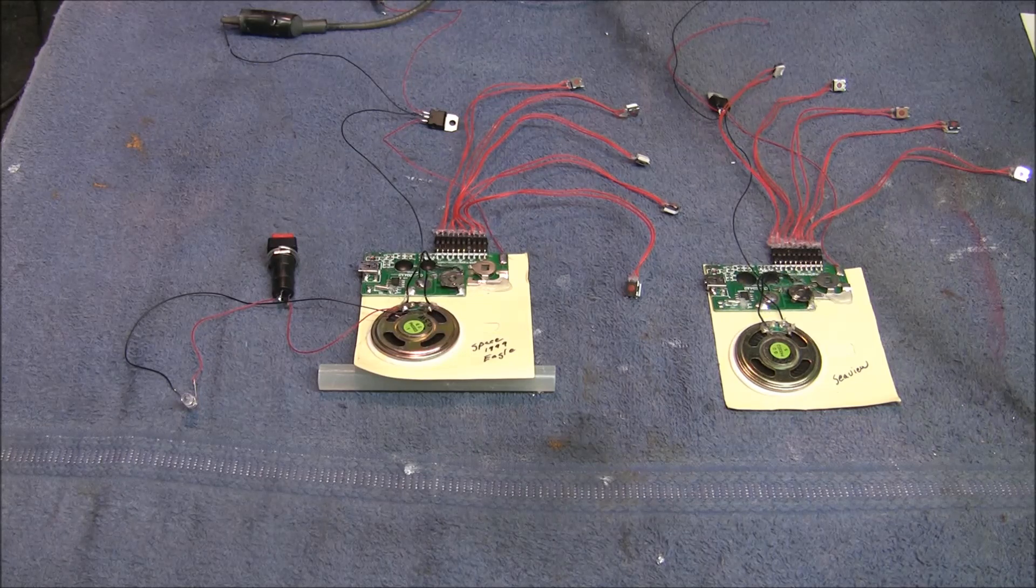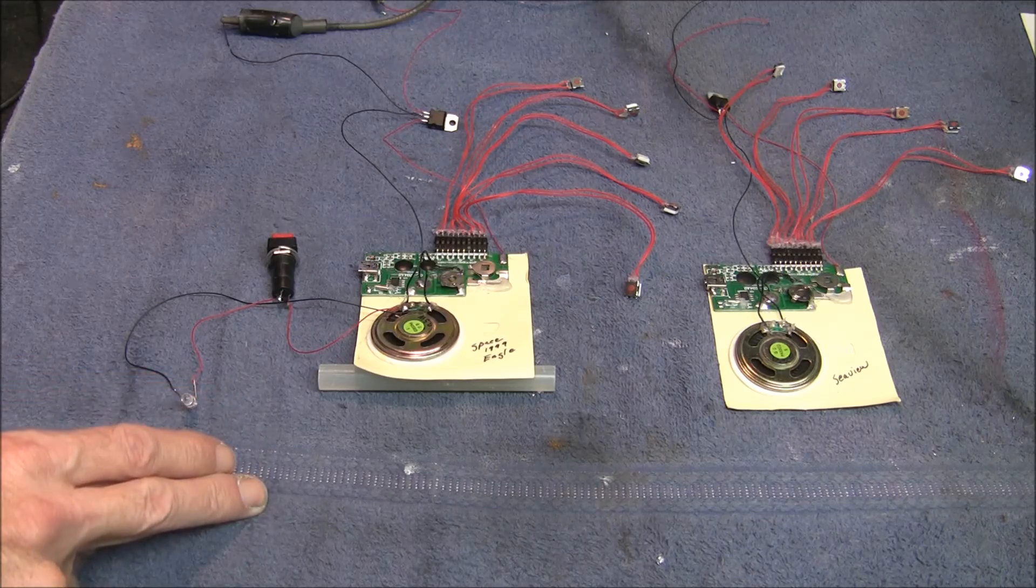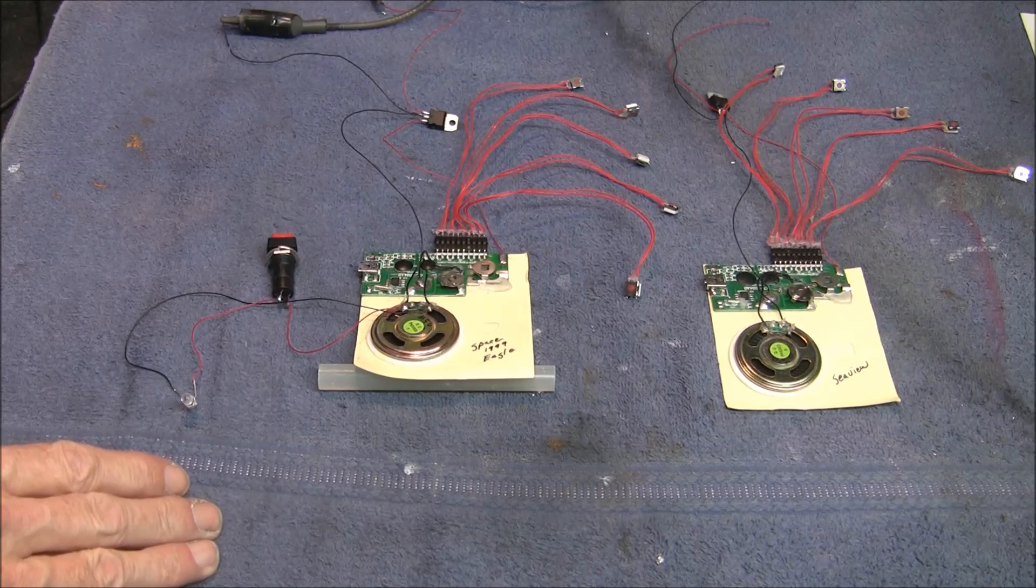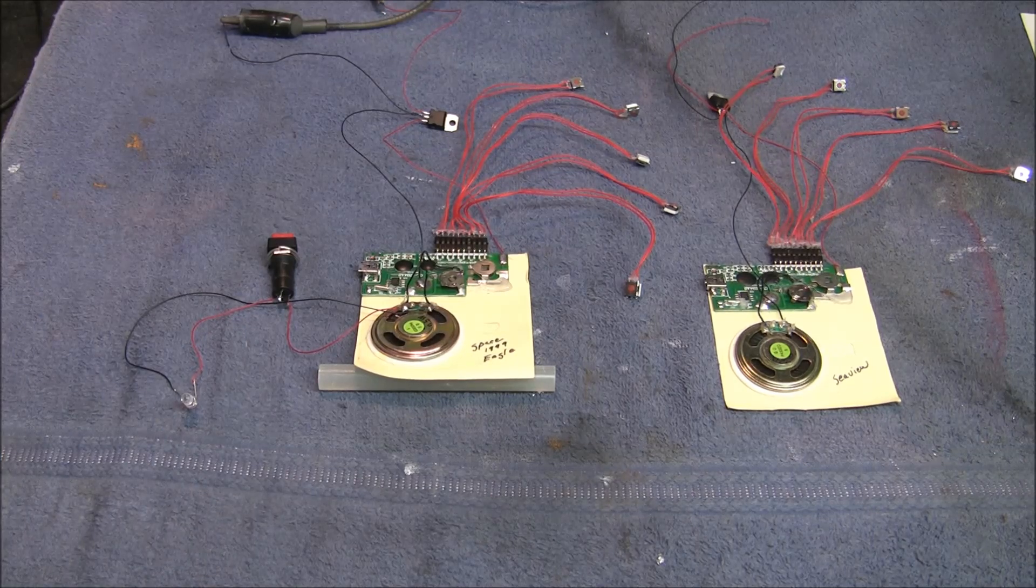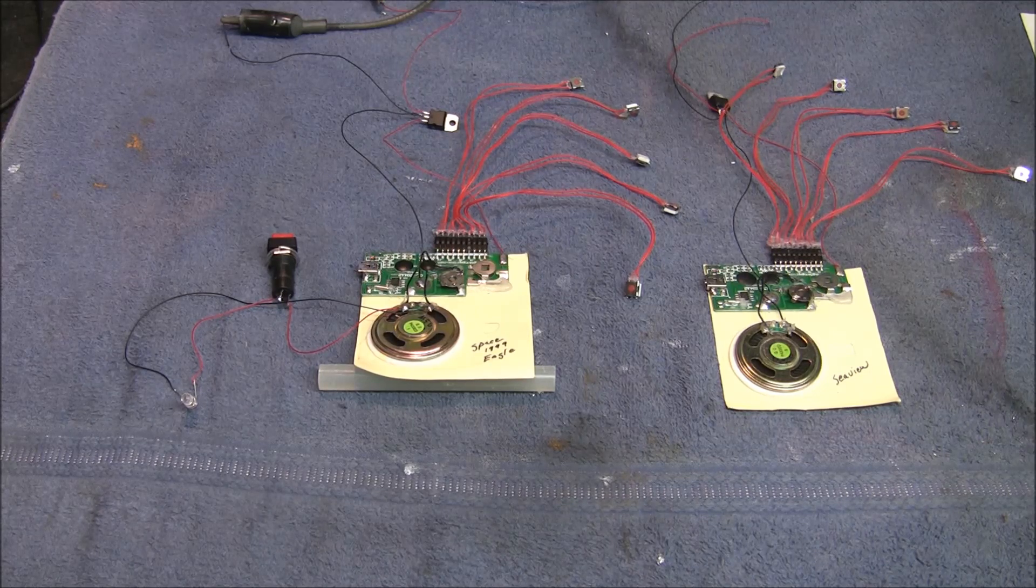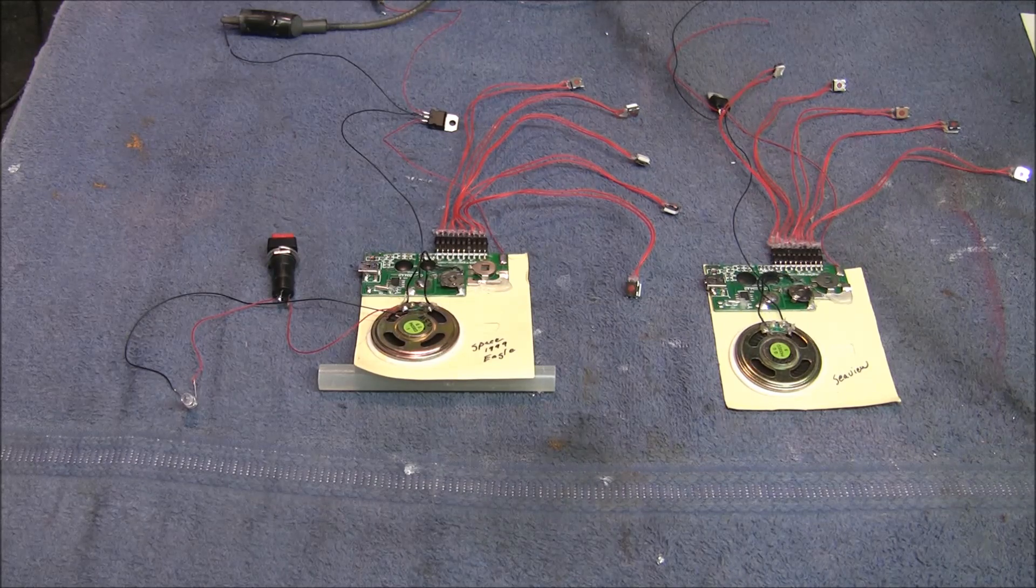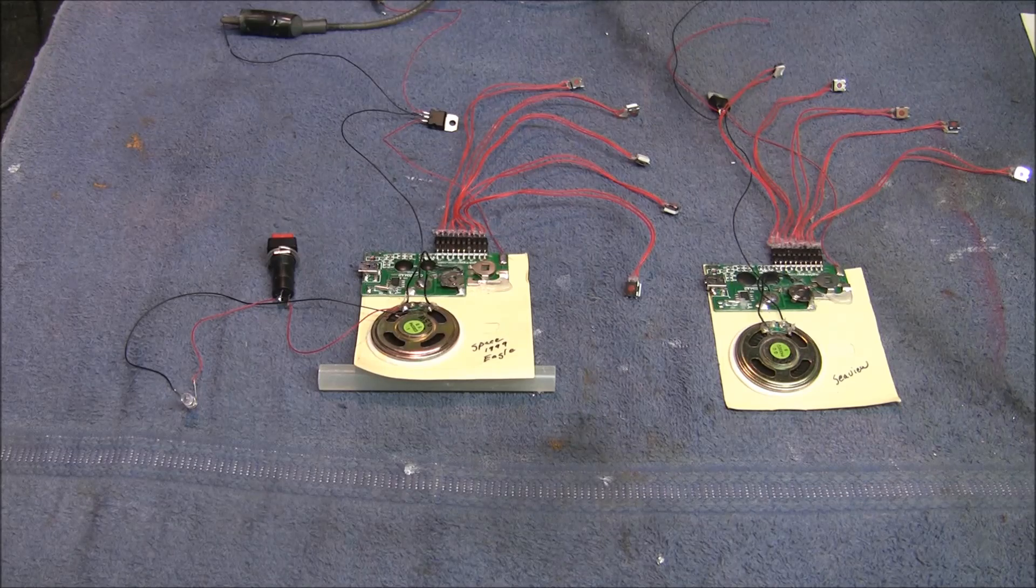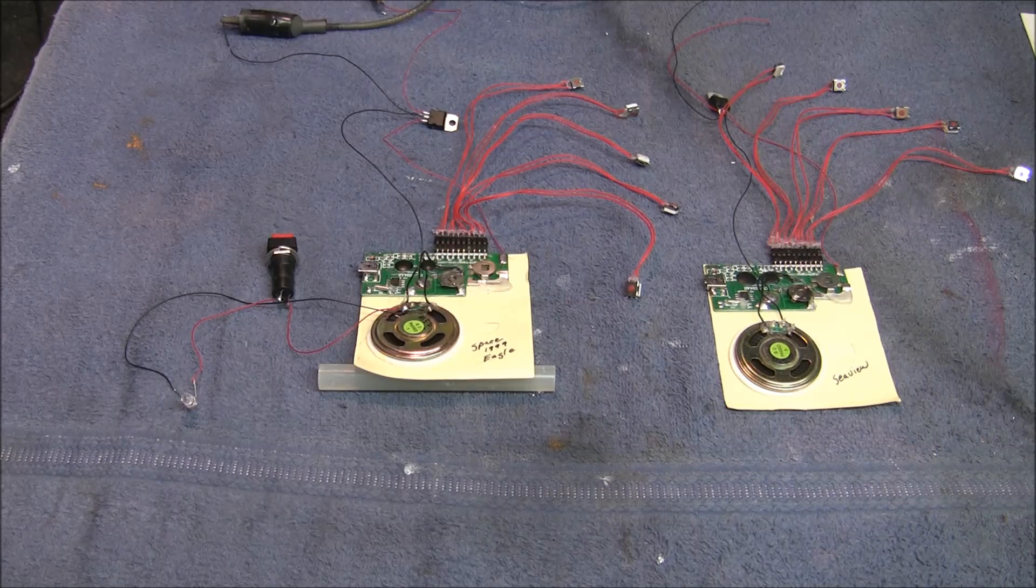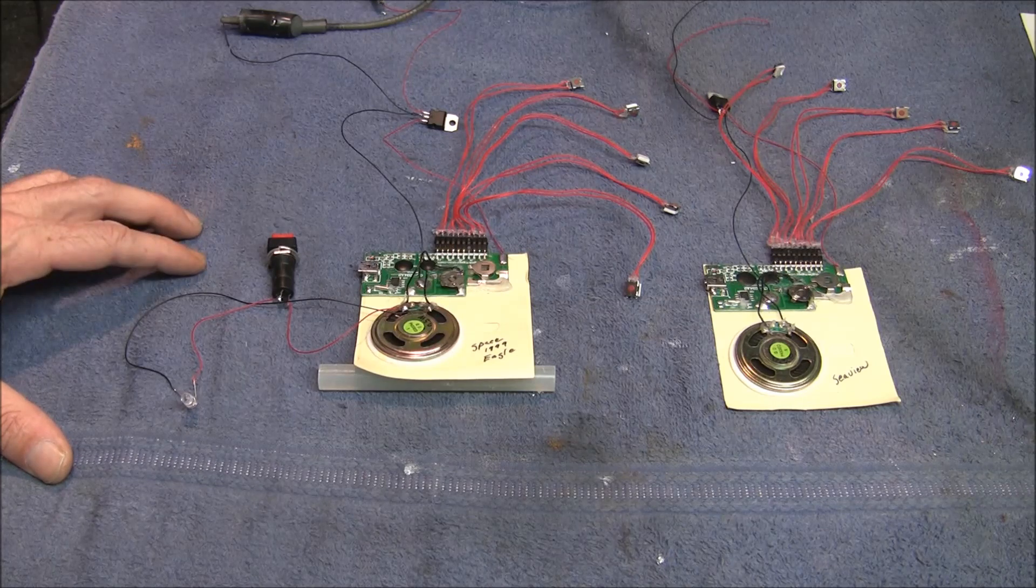I'll explain the Space 1999 Eagle board first. We first have the sound of the opening theme music from the original television show season one. Then we have the sound of the Eagle powering up and launching, and the third sound on the board is the Eagle cruising in cruise mode, the kind of hovering cruising sound that it made. The fourth sound is the sound of the Eagle coming in for a landing, and the fifth sound is the sound of the Eagle firing its lasers and blowing some stuff up. Now as I mentioned, the Eagle board here has a lighting option on this as well.